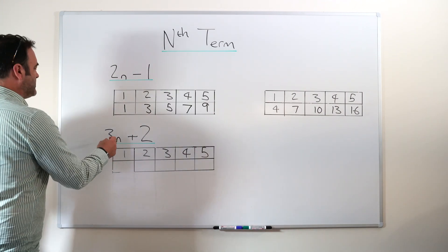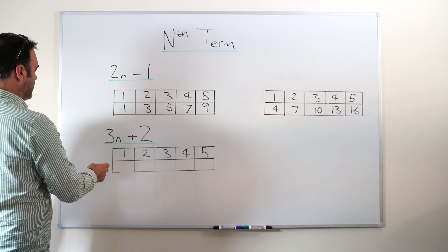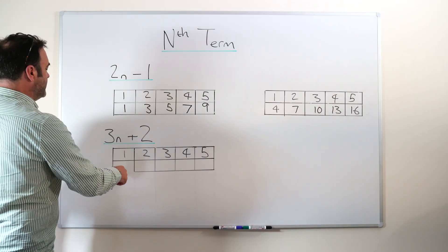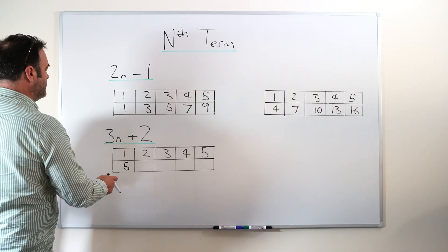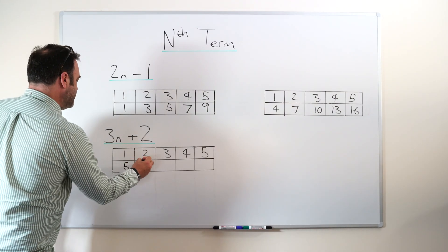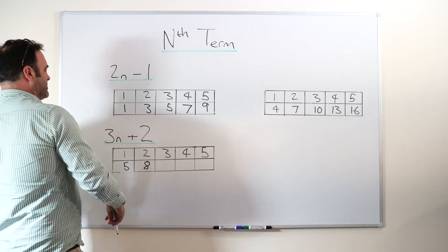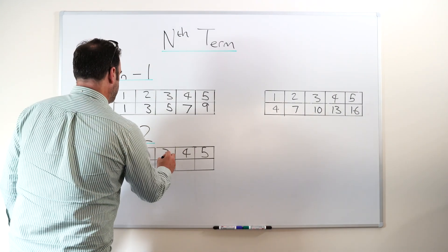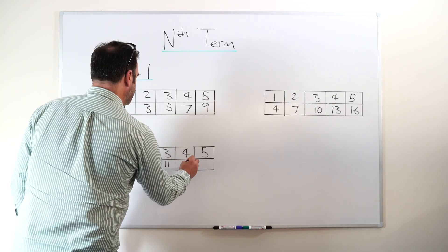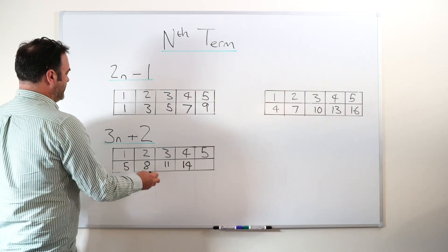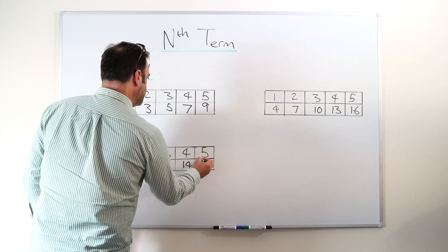This one, for example, three times n plus two. So n is one, three times one is three, plus two is five. Three times two is six, plus two is eight. Three times three is nine, plus two is eleven. Three times four is twelve, plus two is fourteen. Three times five is fifteen, plus two is seventeen.